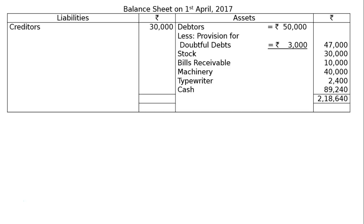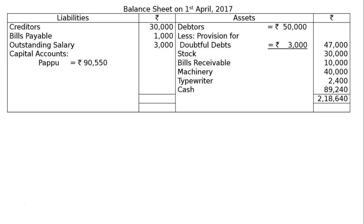On the liability side: creditors Rs. 30,000, bills payable Rs. 1,000, outstanding salary Rs. 3,000. Capital accounts: Pradeep Rs. 90,550, Dhanraj Rs. 24,850, Lander Rs. 69,240. The total of the liability side is Rs. 2,18,640 — same as the asset side totalling Rs. 2,18,640. And this is the final answer.